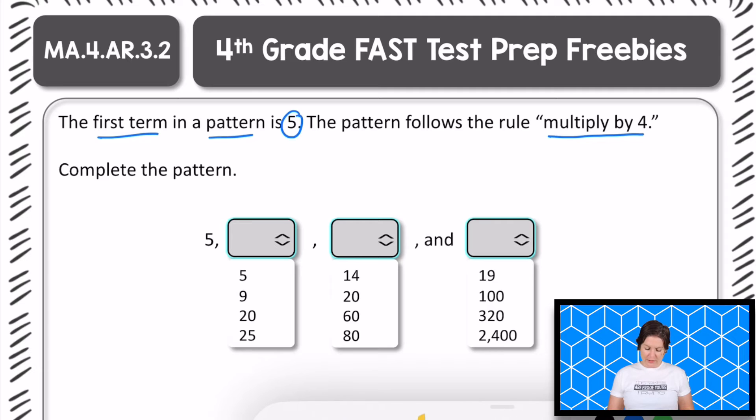We've got the first term right here of 5. The next term, we would need to multiply 5 by the rule of times 4. So 5 times 4 is what? It's 20, right? So what we would do is click this drop down menu and find 20. So again, that was 5 times 4, which equals 20.